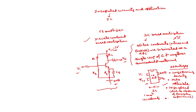The fourth advantage is low cost due to mass production. Once an IC is fabricated, it can be produced in mass. The fifth advantage is that IC-based realization requires low power. Because of these advantages, most circuits today use IC-based realizations instead of discrete component-based realization.